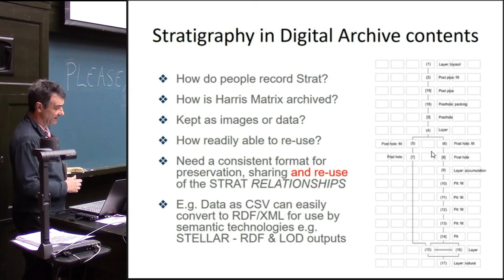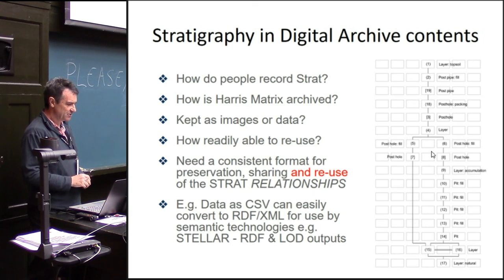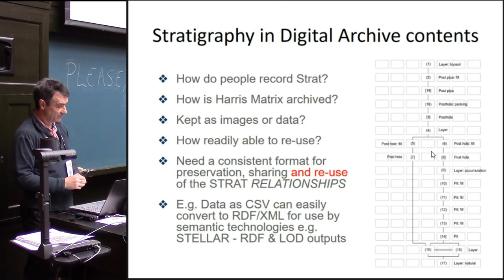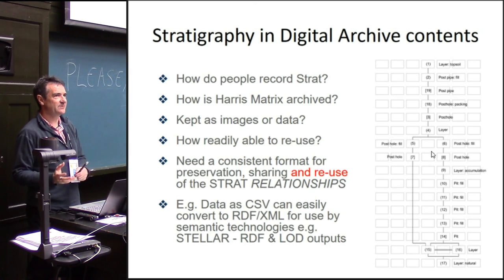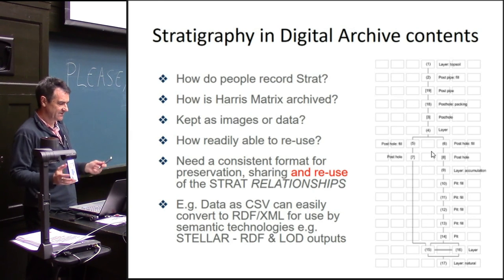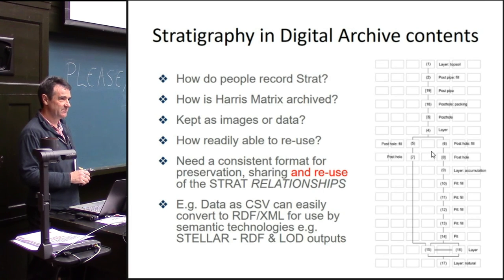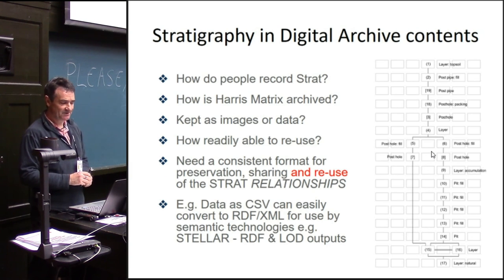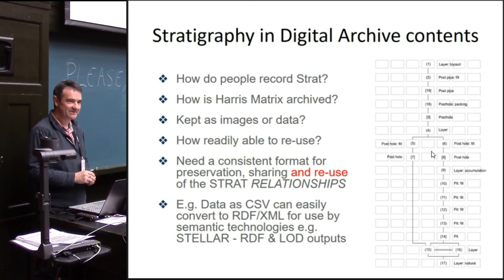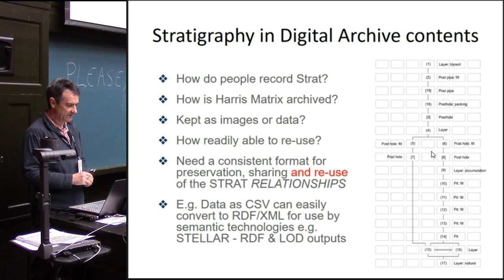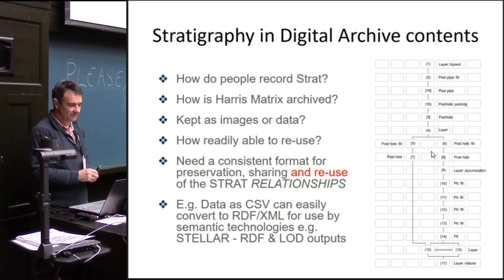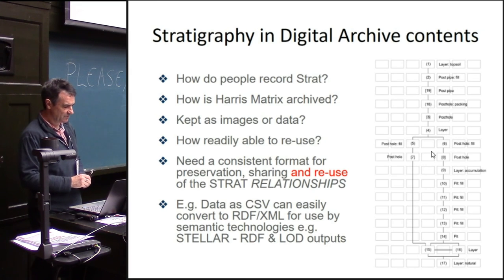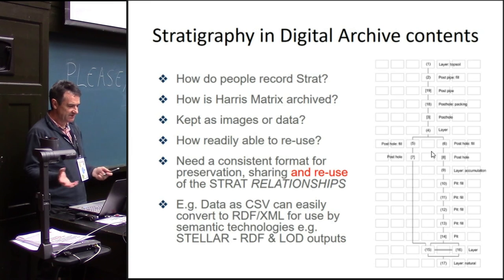Banging the drum then for some of this theoretical work which could be done. But at the moment, one of the issues is how do people record the strat? How are these Harris matrices — the relationships and the stratigraphic information — actually archived? At the moment, it's quite often just kept as images and not as data. I really want to say this to the camera: if you are actually recording this information, please, please put your data in a CSV file when you archive it. It sounds really basic, but it is actually a big message that would save us a lot of pain down the line. People are producing RDF or linked data — that would be fantastic — but as a first step, a lot of our work could be archived better. Data in CSV could easily be converted and used.